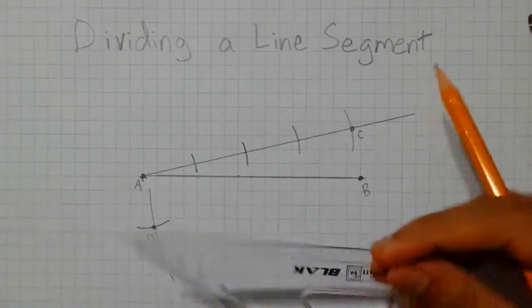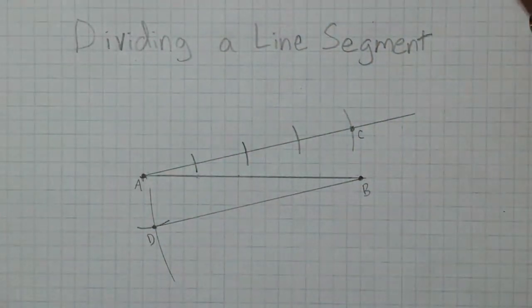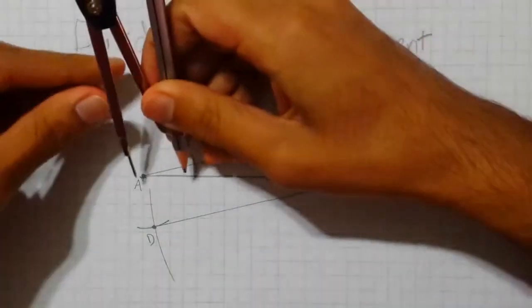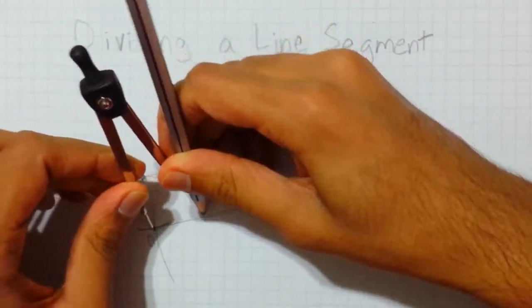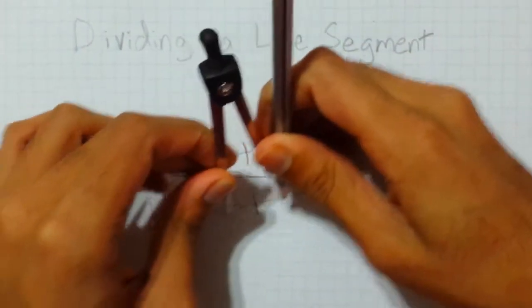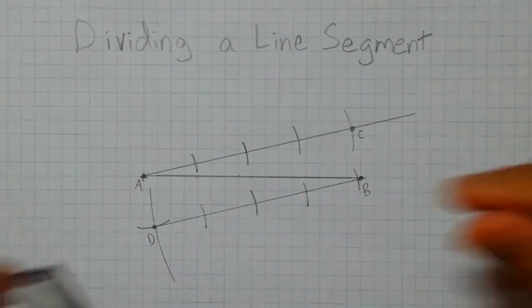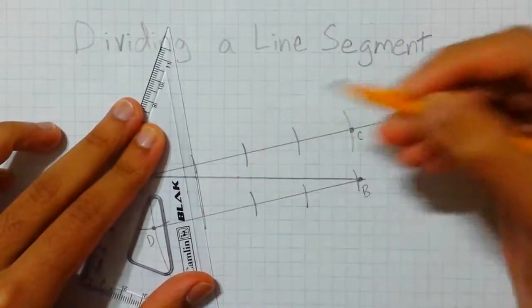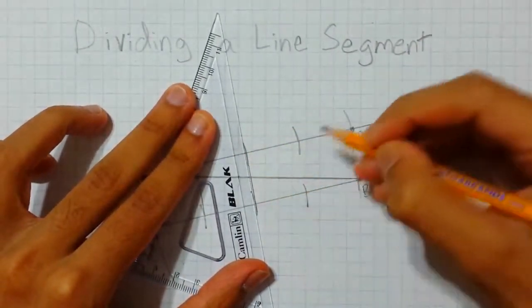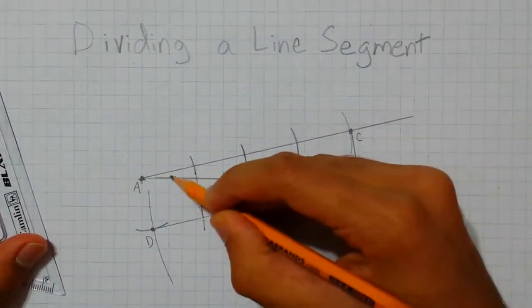Then using a straight edge, connect points D and B. Then using the compass, measure the distance between A and this first arc. Then place the tip of the compass on point D and make four arcs again on line segment DB. Then using the straight edge, connect each intersection to the subsequent intersection on the other line segment. This has divided the line into four equal segments.